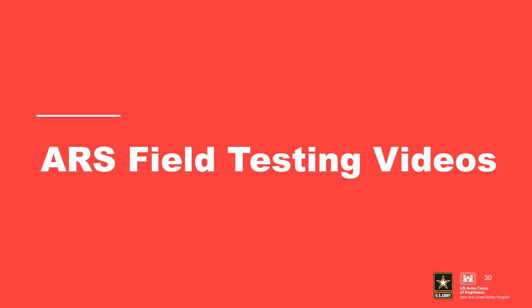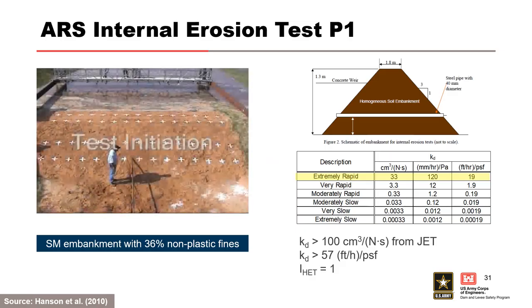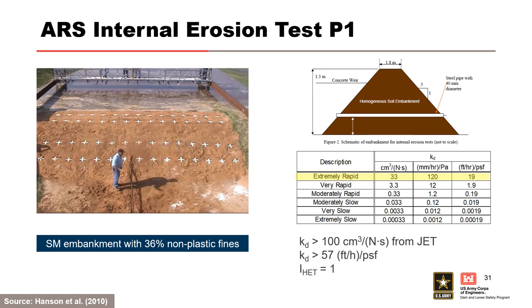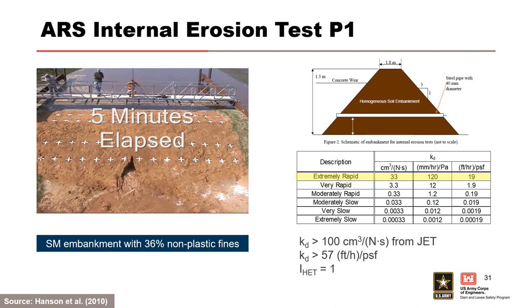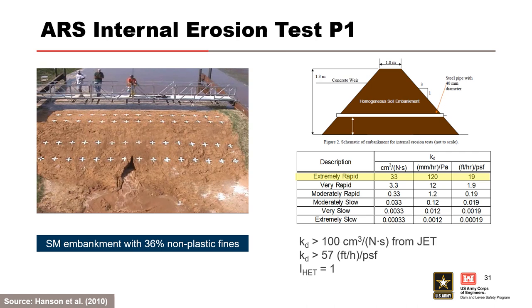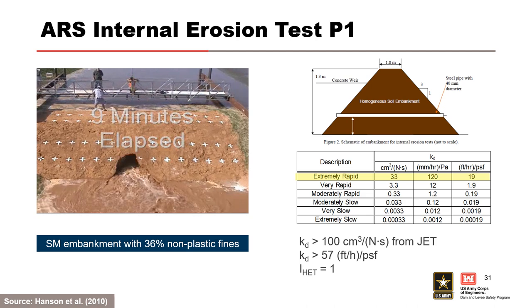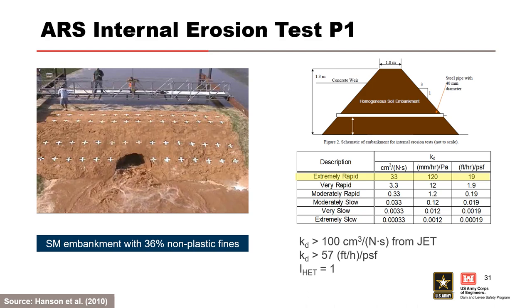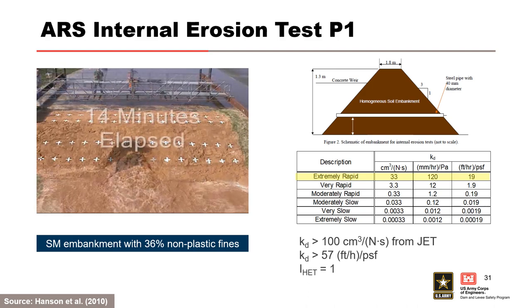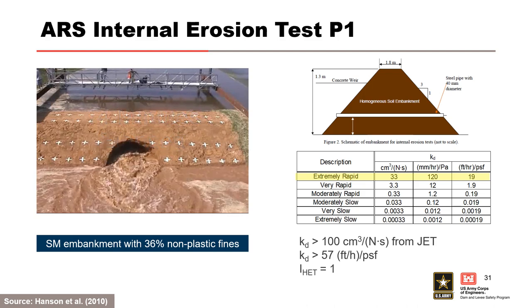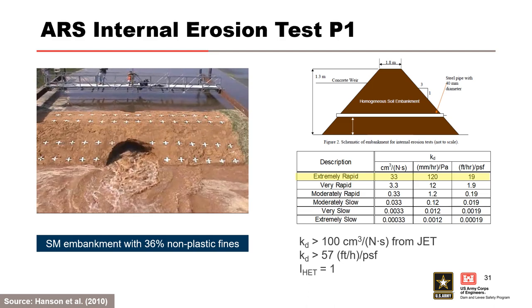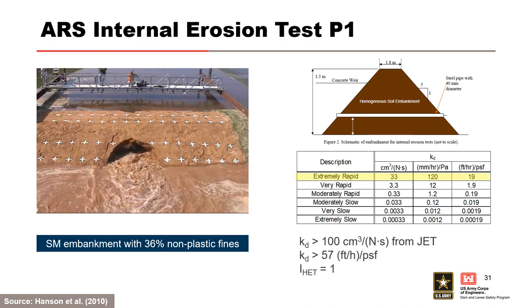To help put things into perspective, some videos of large-scale field erosion tests will be shown — one for an extremely erodible soil and one for a moderately erodible soil. This is a video of field testing performed by the USDA's Agricultural Research Service on an extremely erodible material with an extremely rapid rate of erosion. Once the reservoir was filled and water was flowing over the long weir on the upstream side of the embankment, the 40 millimeter diameter pipe was pulled from the embankment and the testing was initiated. The flow path enlarged rapidly on the downstream side and collapsed within 13 minutes of test initiation. Once collapse occurred, breach widening developed at a rapid pace. A head cut developed at the flow outlet and progressed upstream internally during the erosion process.